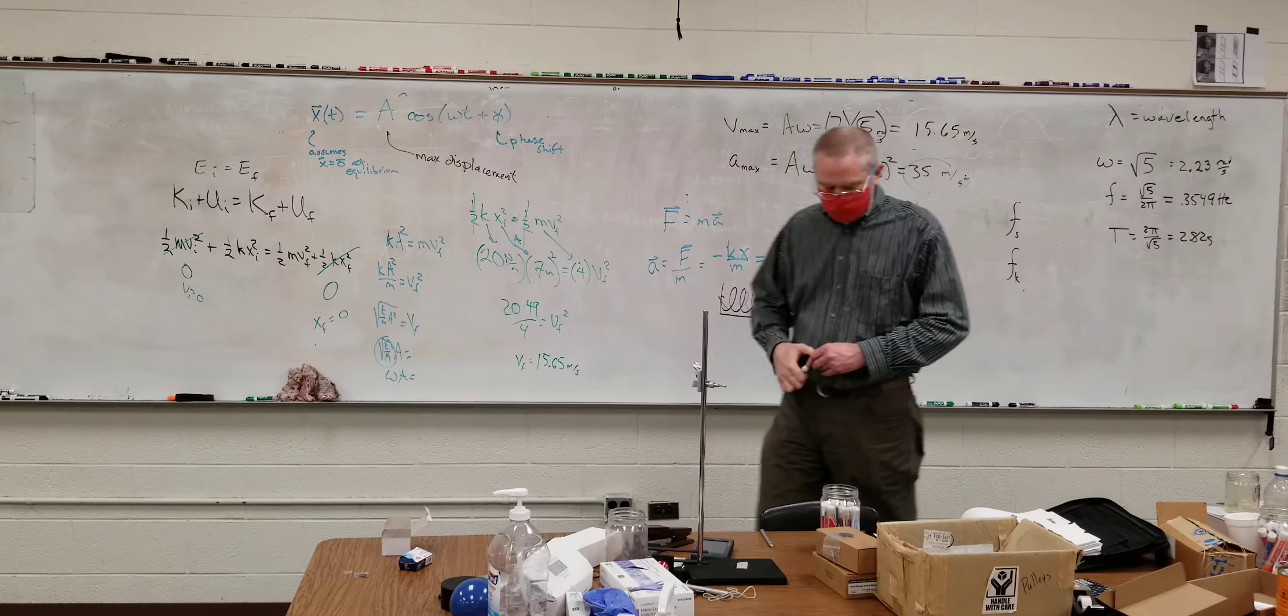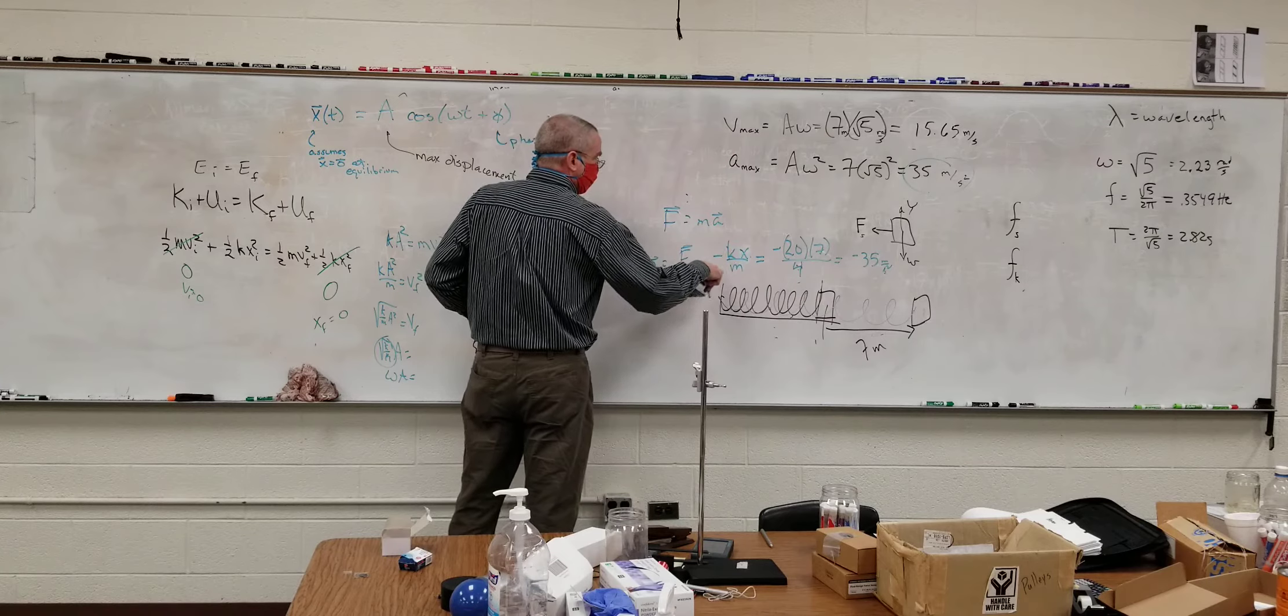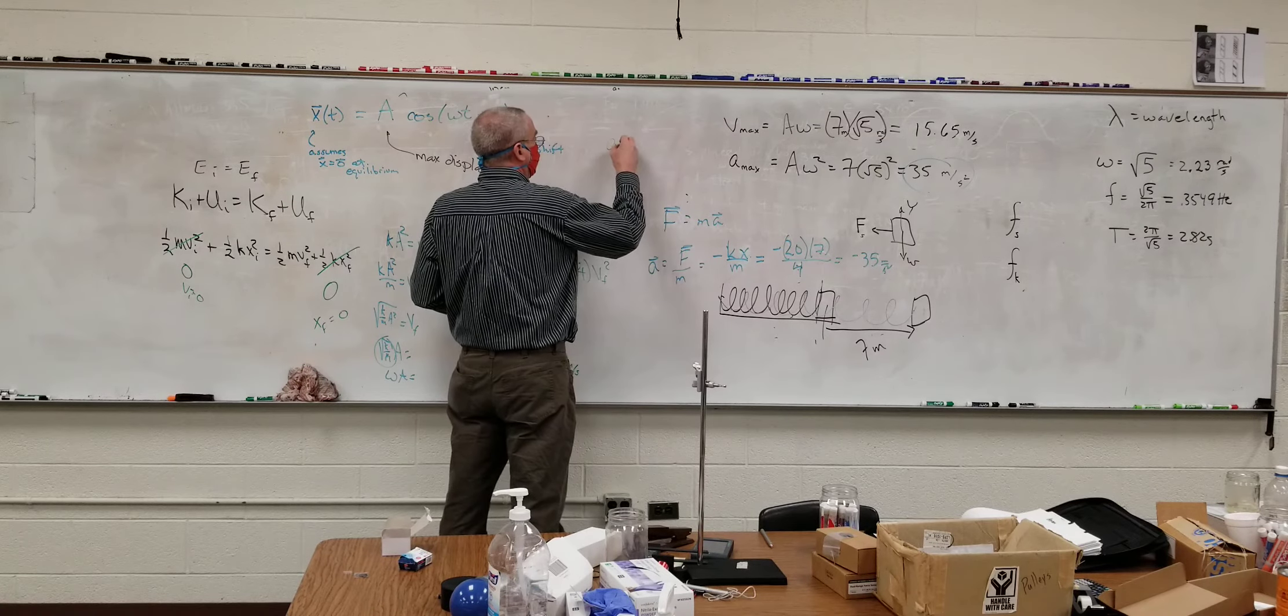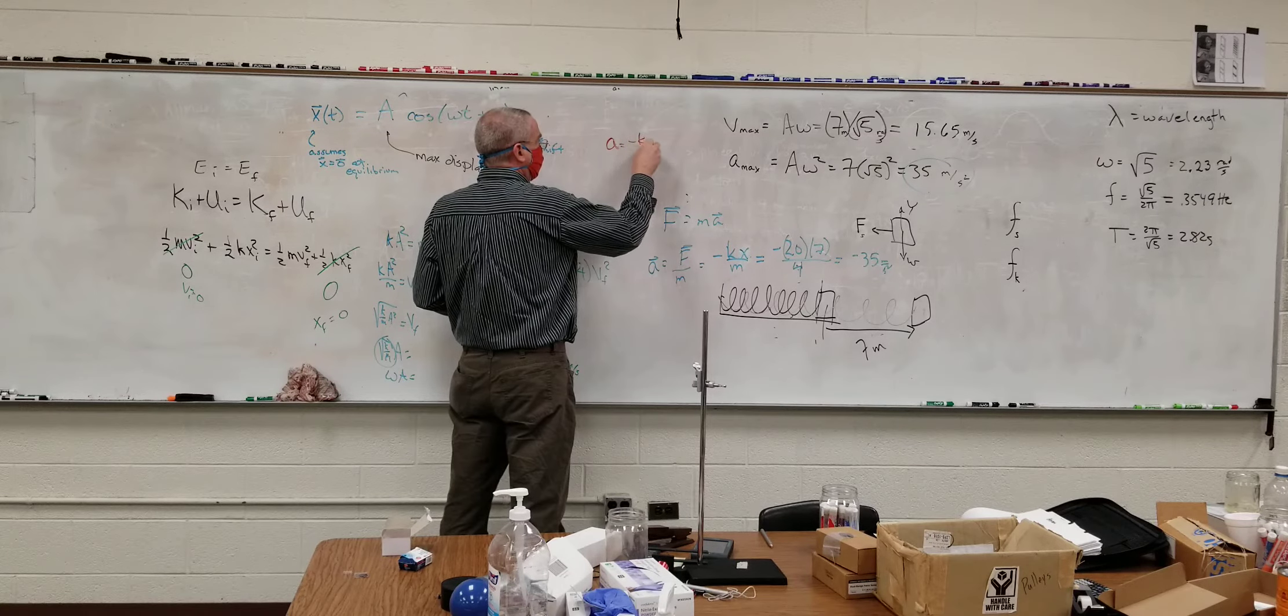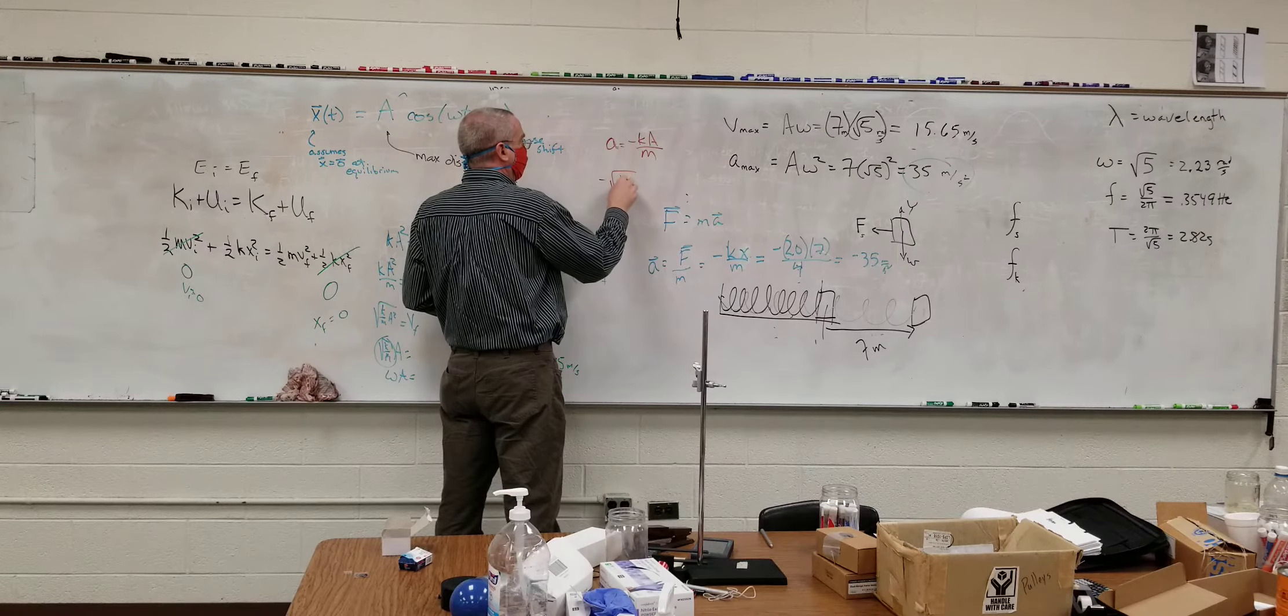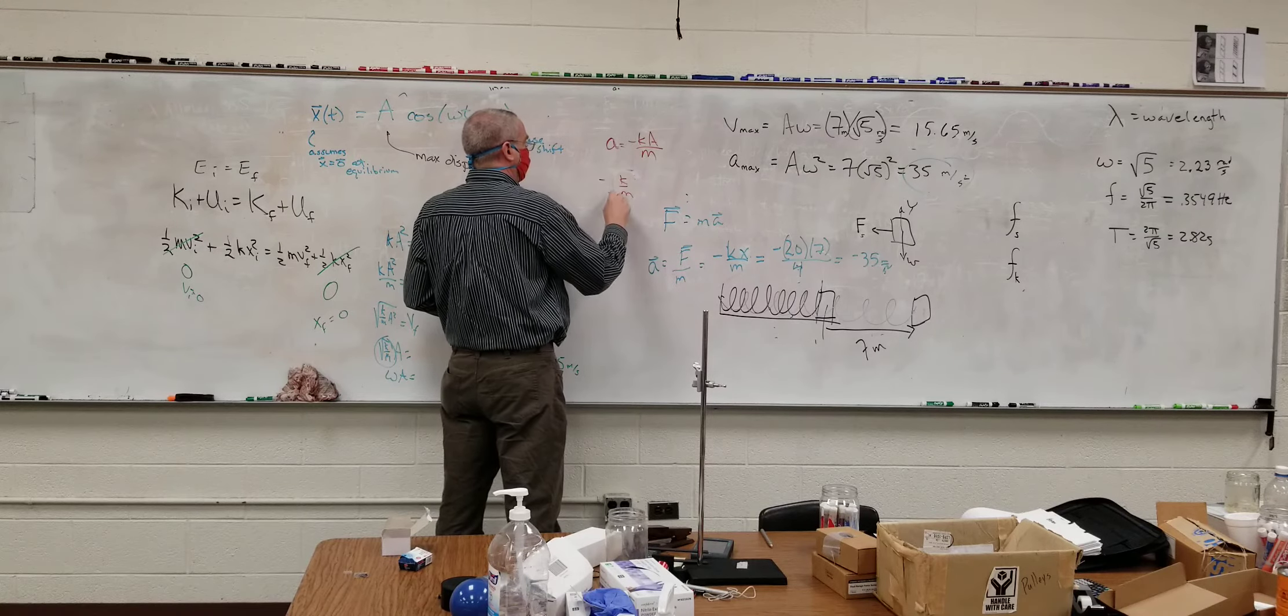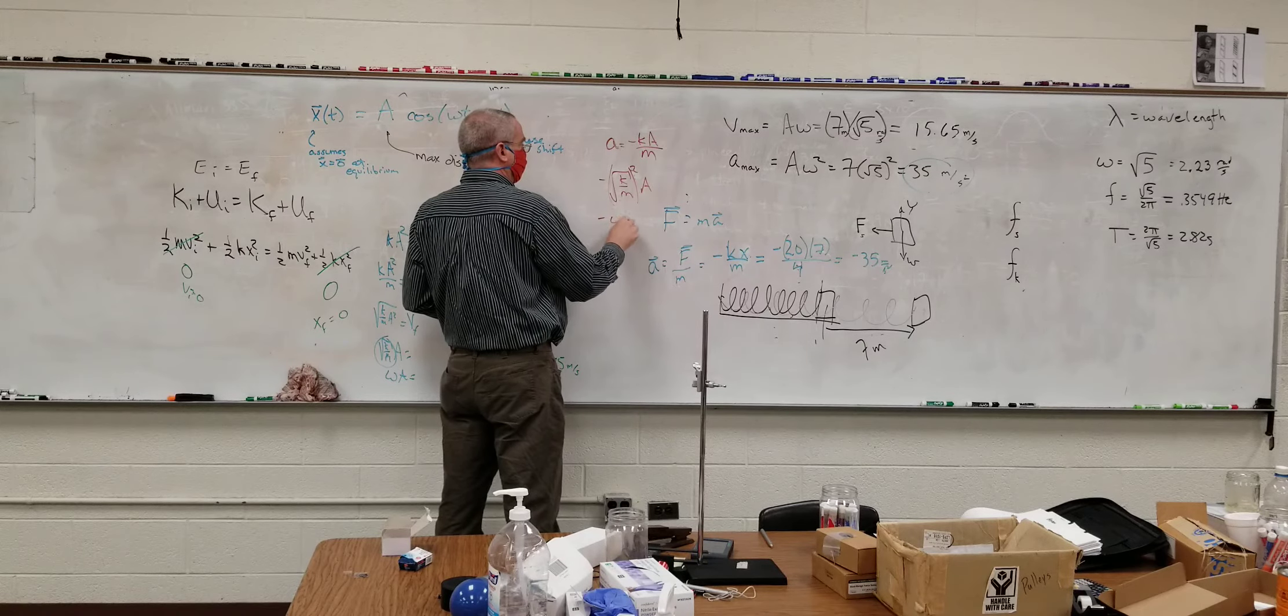And again, for the same reason, let's go through the steps here. My acceleration here, my acceleration is maximum when the force is at a maximum, which is when it's stretched the most. So my acceleration would be negative k times my amplitude over my mass, which is negative square root of k over m. Let's try that again. Yeah, I am going to write it that way. Negative square root of k over m squared times a, which is negative omega squared a.